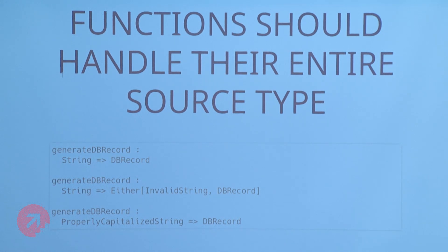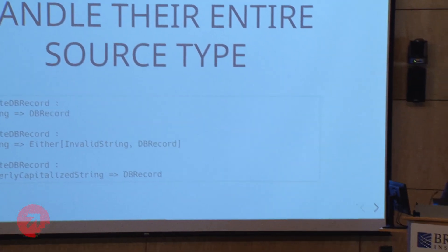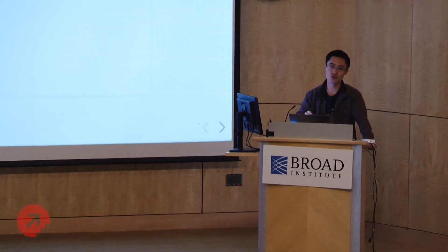For example, take 'generateDatabaseRecord.' Your first pass might be: take an arbitrary string, return a database record. But you probably can't take arbitrary strings — they usually have to be formatted a certain way. So you make it total, wrapping it in 'Either[InvalidString, DatabaseRecord].' But this still isn't capturing the spirit of the precondition. We've moved a precondition from the pre-part to the output. If we just move it to the input type — say it has to be a 'ProperlyCapitalizedString' — all of a sudden we've removed the Either and we've signaled in a human-readable, compiler-checked way the institutional knowledge about what checks need to be performed.